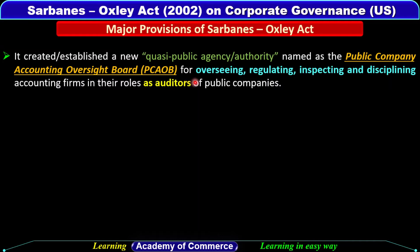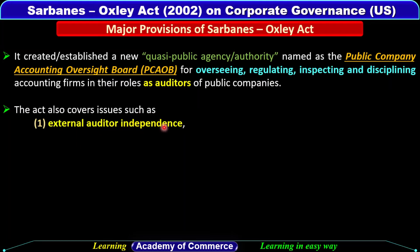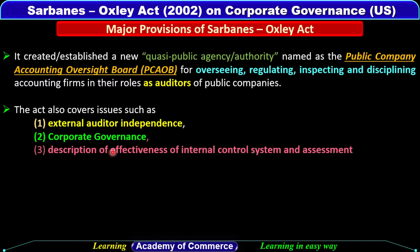The Public Company Accounting Oversight Board was created to oversee, regulate, and ensure that audit work for public companies is being performed correctly. The Act also covers issues such as external auditor independence — how independent the external auditor is who is appointed for auditing the company — as well as corporate governance-related issues and assessment of the effectiveness of a company's internal control system.